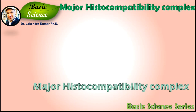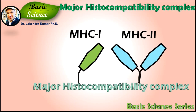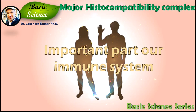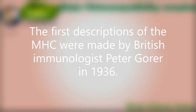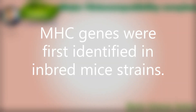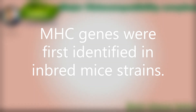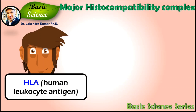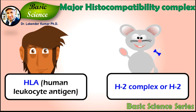In this presentation, we will discuss the major histocompatibility complex, otherwise known as MHC. It is a very important part of the immune system. The human MHC is called the HLA complex — human leukocyte antigen complex. The MHC in mice is called the H2 complex.